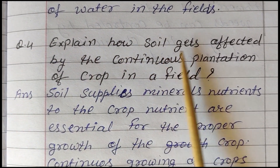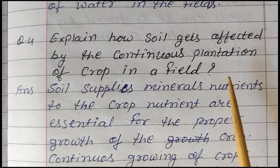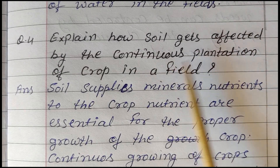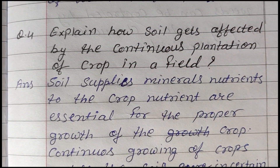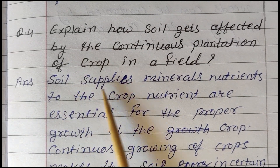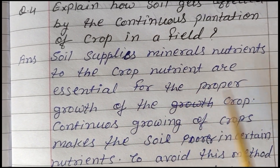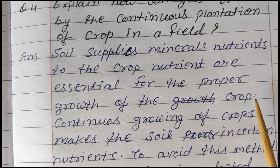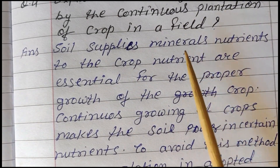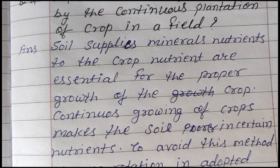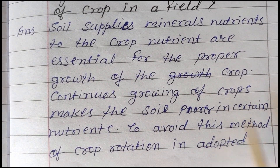Question 4: Explain how soil gets affected by the continuous plantation of crops in a field. (Yadi hum continuous faslein ugate rahenge, to mitti ko bahut adhik nutrients aur khanij tattvon ki avashyakta hogi jo usse mitti se prapt hote hain.) Continuous growing of crops makes the soil poorer in certain nutrients.